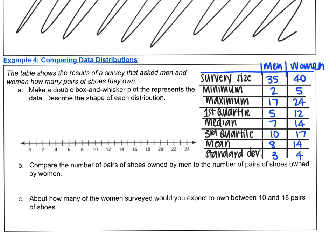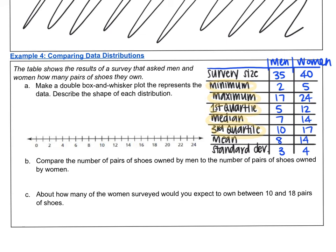I want to go ahead and draw a box and whisker plot for each of those. Remember, we use five pieces of information for the box and whisker plot: the minimum, maximum, first quartile, median, and third quartile. So the ones I just circled are the ones I'm going to use. First I'll do men. For men, minimum is two, first quartile is five, median is seven, third quartile is 10, and maximum is 17. I'll draw my box and my whiskers.